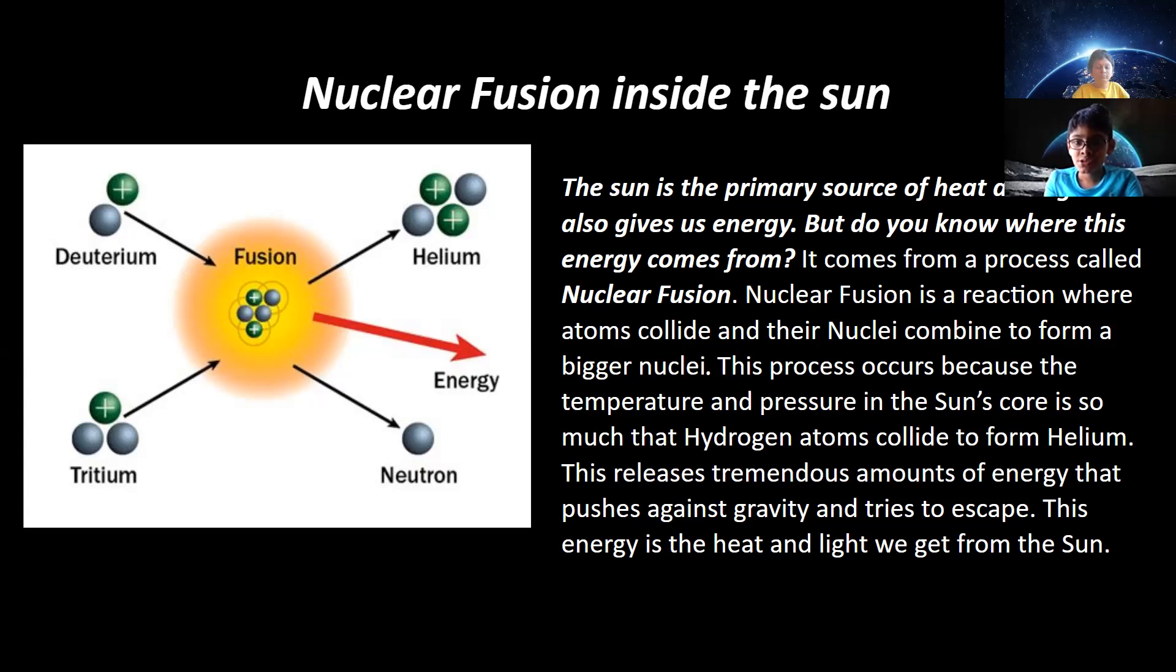Nuclear fusion is a reaction where atoms collide and their nuclei combine to form a bigger nuclei. This process occurs because the temperature and pressure in the sun's core is so much that hydrogen atoms collide to form helium. This releases tremendous amounts of energy that pushes against gravity and tries to escape. This energy is the heat and light we get from the sun.